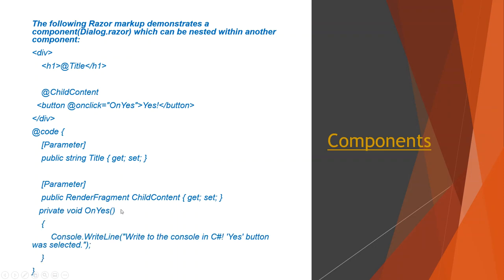The @code segment is the server-side code. It has a [Parameter] attribute and two public properties: one is Title and another is ChildContent which renders a fragment. There is a button with an onclick event that triggers the OnYes method. The OnYes method calls Console.WriteLine, writing 'Yes button was selected' to the console in C#. That's all about the dialog component.